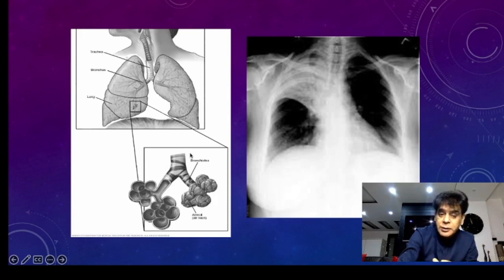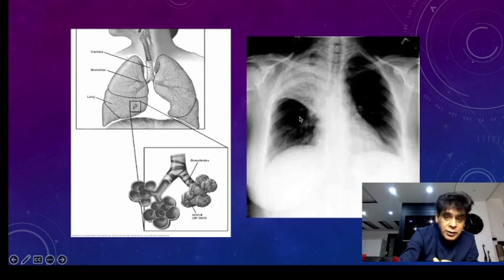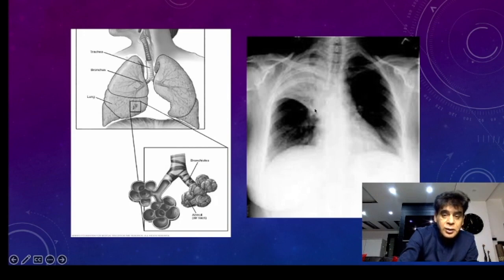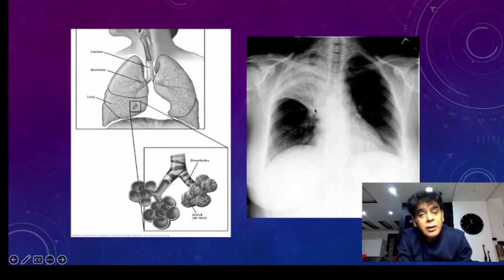What happens when the alveoli become bright? Whenever they become bright, there is a chance of seeing the bronchi. You can see in this case there is a bright patch, and here you can see the dark areas of bronchi within the lung. This is known as an air bronchogram.